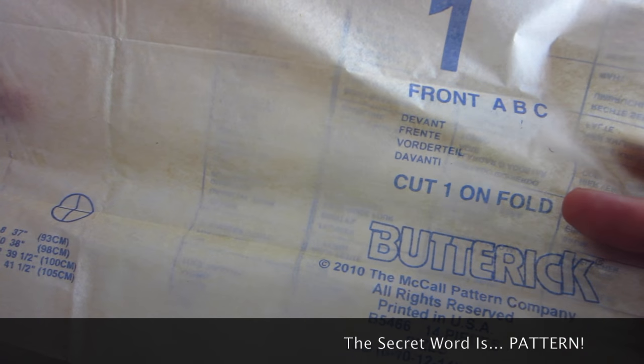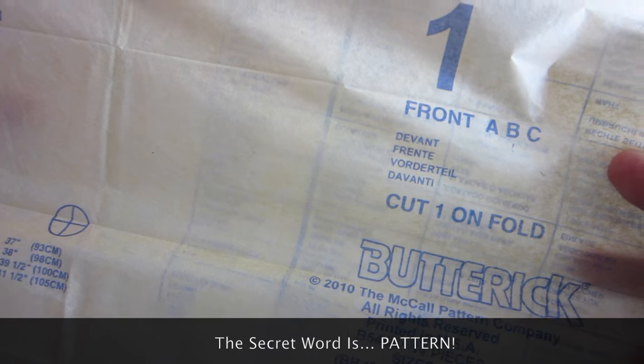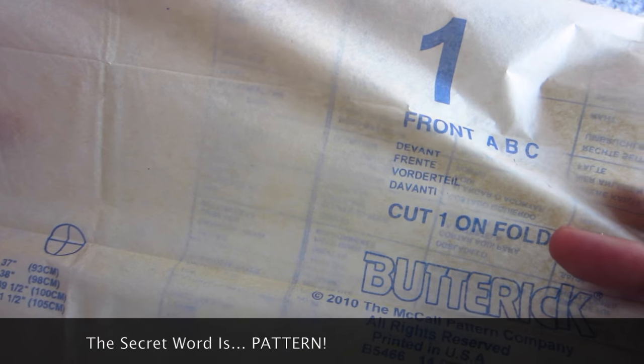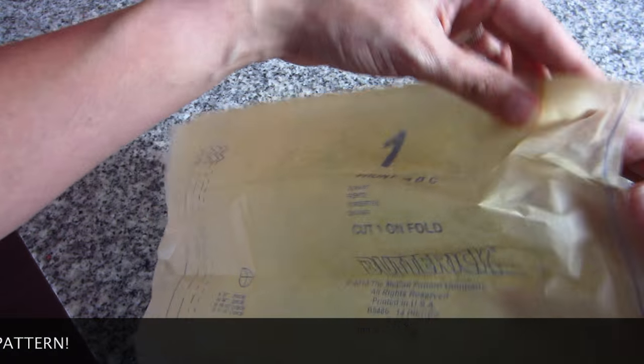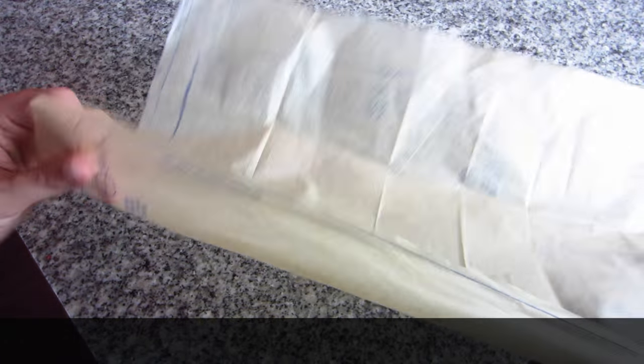And then it'll also tell you to cut, like how many pieces to cut. This says cut one piece on the fold. Again, we'll go into this in a little bit more detail next week, but it also tells you right here on the side that this is the fold line.